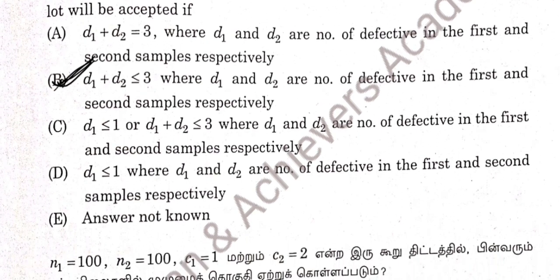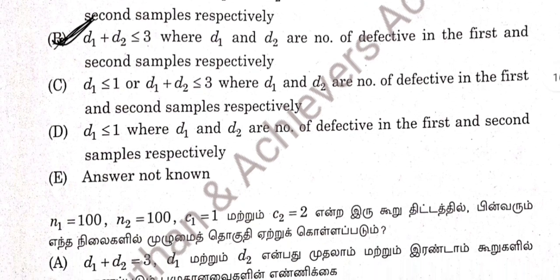Question 78: Double Sampling Plan. Option B. The condition is D1 plus D2 less than or equal to 3, where D1 and D2 are the number of defectives in the first and second samples.